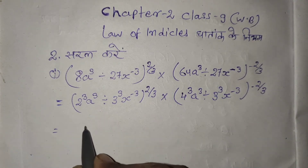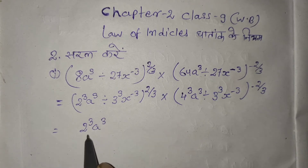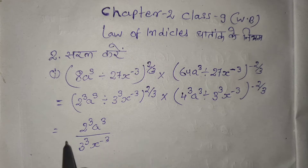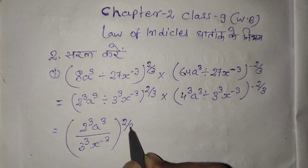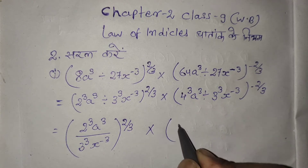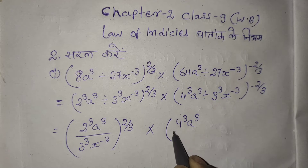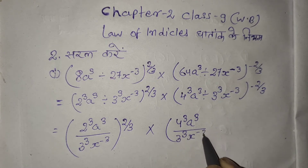We can write this as: 2 power 3, a power 3, divided upon 3 power 3 and x power minus 3. So we have 2/3 into 4 power 3, a power 3, upon 3 power 3, x power minus 3.